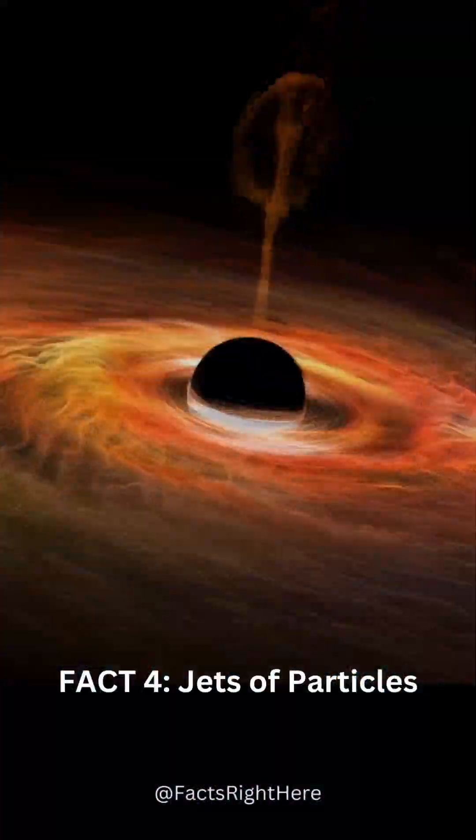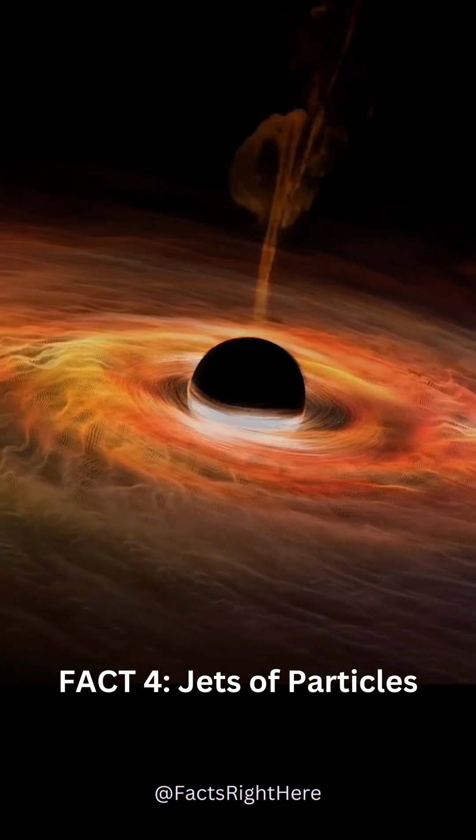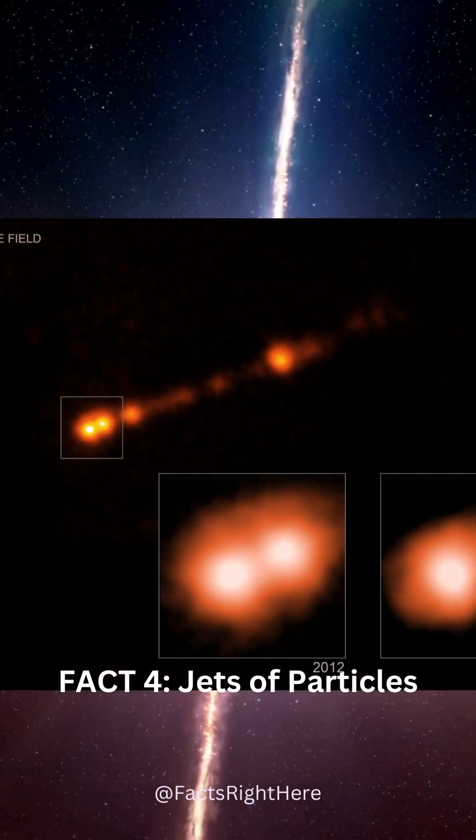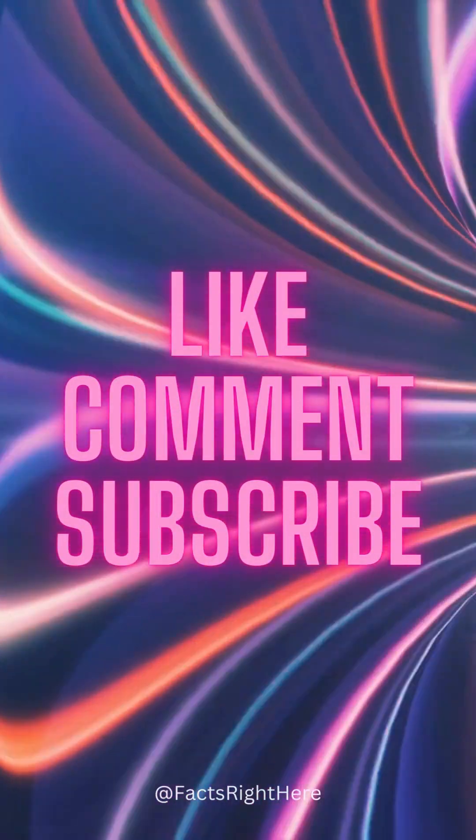Black holes can emit powerful jets of particles at nearly the speed of light. These jets are formed by magnetic fields that channel matter from the black hole's accretion disk.